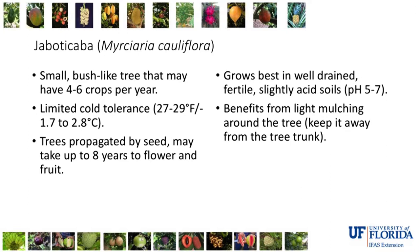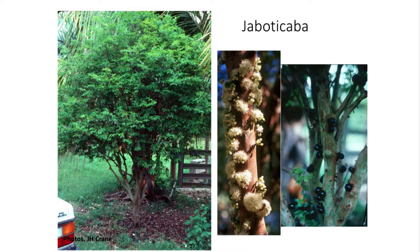Jaboticaba is a small tree — you can plant it 10 to 15 feet or less from other trees, buildings, or structures. It can have four to six crops per year, is generally slow growing, likes acid soils, and benefits from mulching. It flowers on the stems and trunks and produces something that looks like a grape on the trunks — giving you multiple crops off the same tree in one year. It is very well known in Brazil.